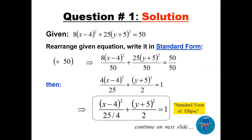So take the given equation and rearrange it into standard form, which means we need a 1 on the right side. Divide every term by 50. Then 8/50 simplifies — divide numerator and denominator by 2 — to get 4/25. And 25/50 simplifies to 1/2. So the standard form is (x−4)²/(25/4) + (y+5)²/2 = 1.